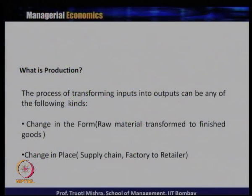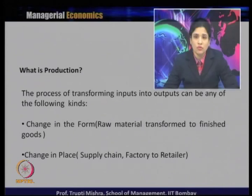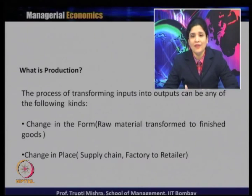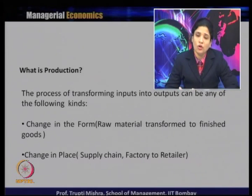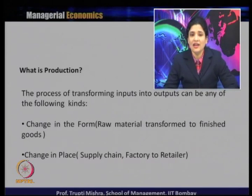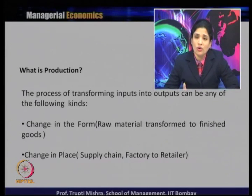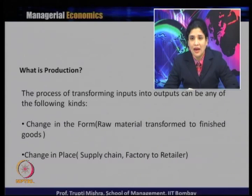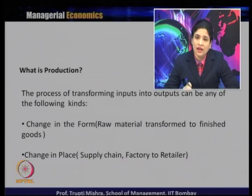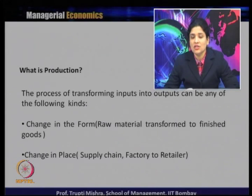This process of transformation — whether transforming inputs into output or intermediary products into final products — is of two kinds. One is a change in form, and the second is a change in place. In the case of change in form, raw material is transformed into finished goods. In the case of change in place, we talk about the supply chain — how output moves from the factory to the retailer.